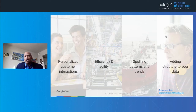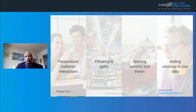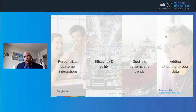There are three areas where AI is changing the enterprise: personalized customer interactions — I'll talk about what Ocado does with that; efficiency and agility — I'll talk about how we do that in Google data centers; spotting patterns — I'll tell you what Rolls-Royce is doing with that; and adding structure to your data, which is something our customer Box is doing.